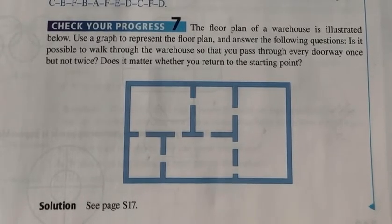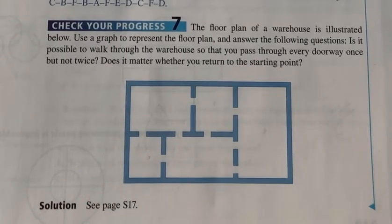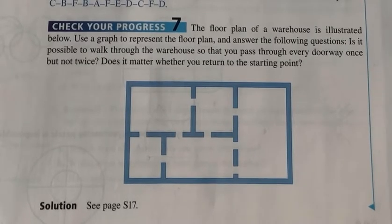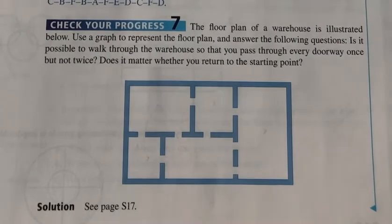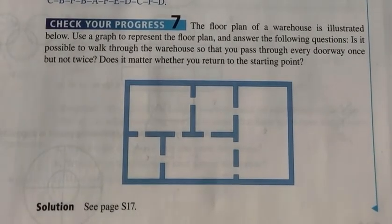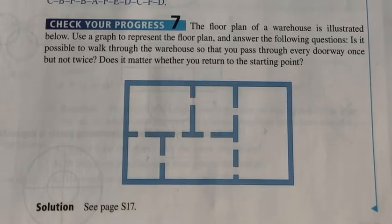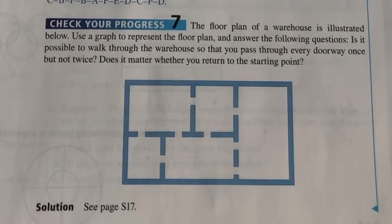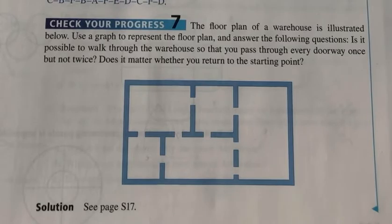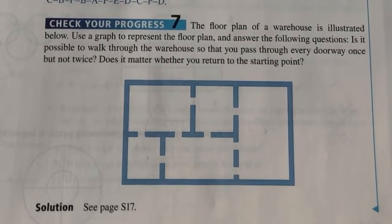Check Your Progress 7, page 239, section 5.1. Last problem for section 5.1. The floor plan of a warehouse is illustrated below. Use a graph to represent the floor plan and answer the following questions. Is it possible to walk through the warehouse so that you pass through every doorway once but not twice?